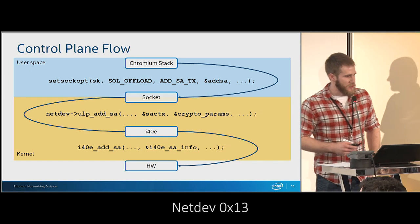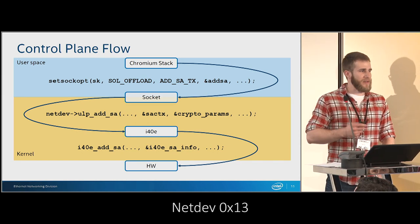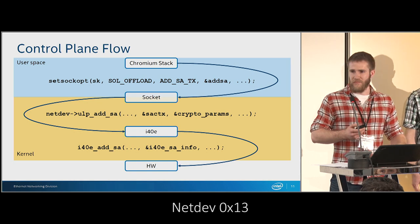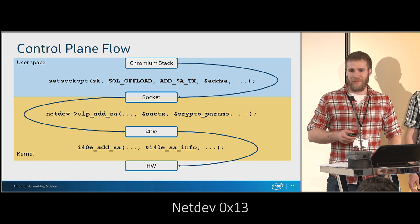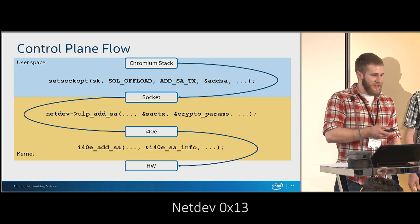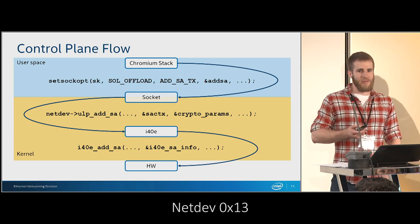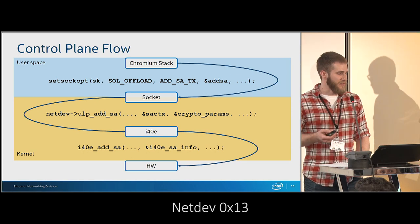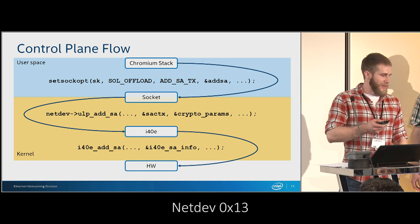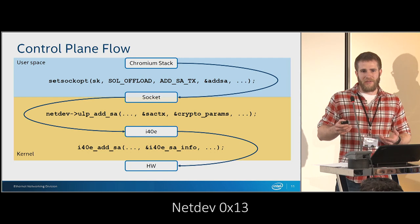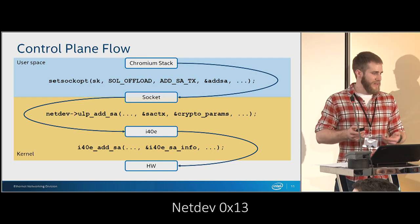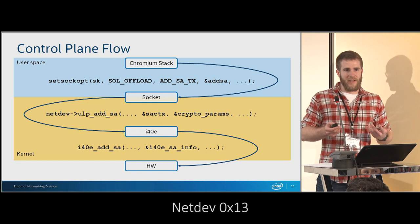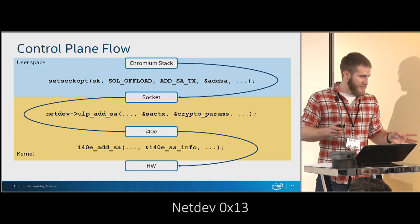Here's an example flow: you start with the Chromium stack, you set up a socket with this new socket layer option - we're calling it ULP QUIC for now, though we're not tied to the name. You have the command add_sa_tx, adding a transmit security association, and the add_sa structure contains all the keys and necessary information to do the offload. It goes through the socket, hits the socket layer where we have our net dev and registered devops struct with the hook into the driver, which calls our specific function to format the data we need to send to the hardware.